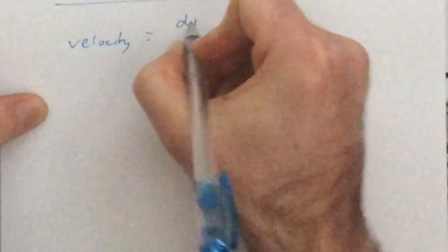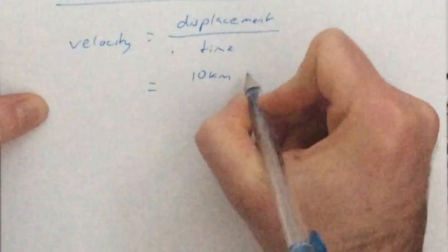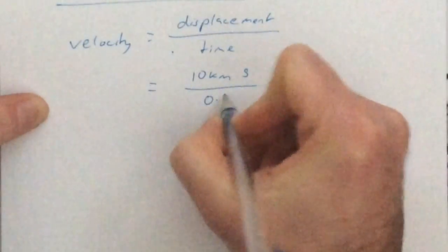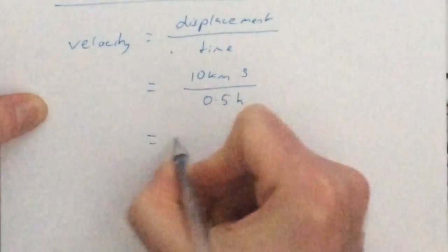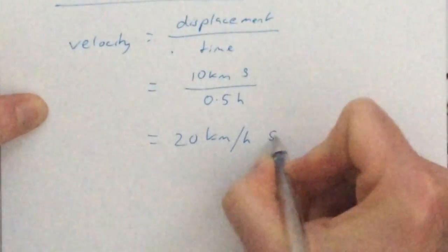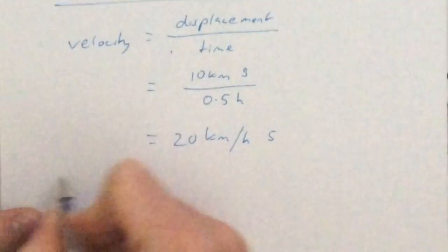However, my velocity is different. Since I have a displacement of 10 kilometres south, my velocity is 10 kilometres south divided by half an hour, which comes to 20 kilometres per hour south.